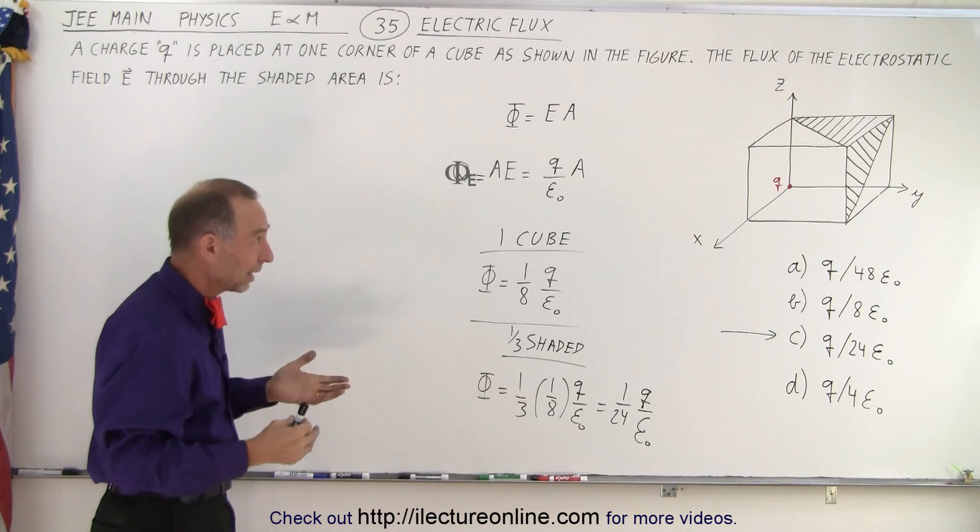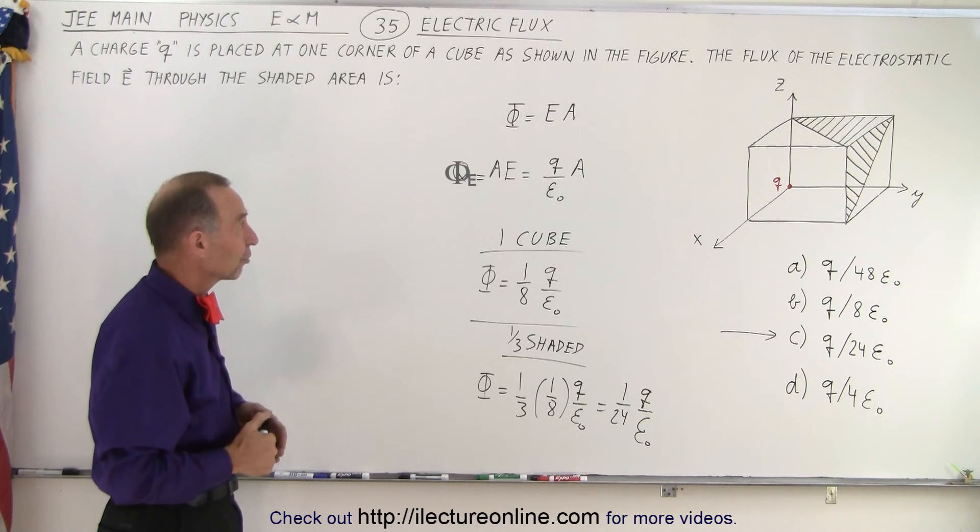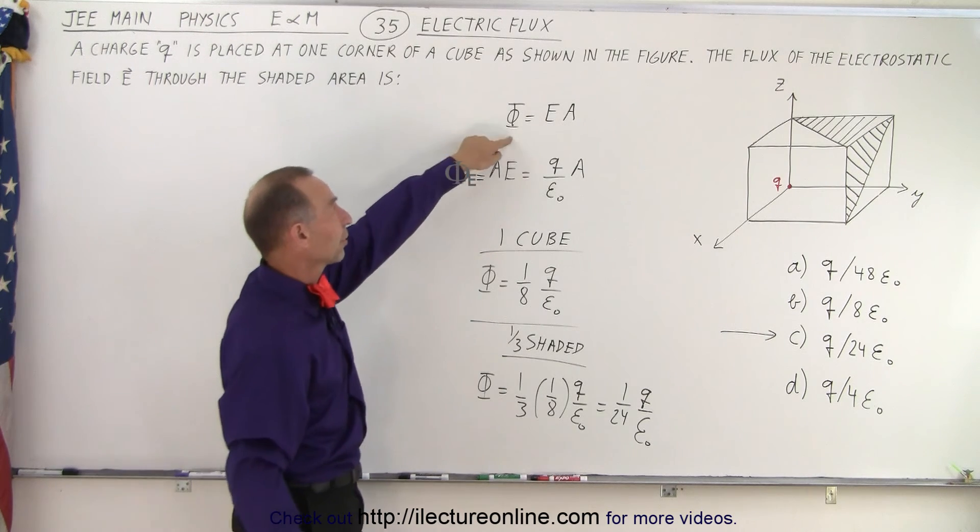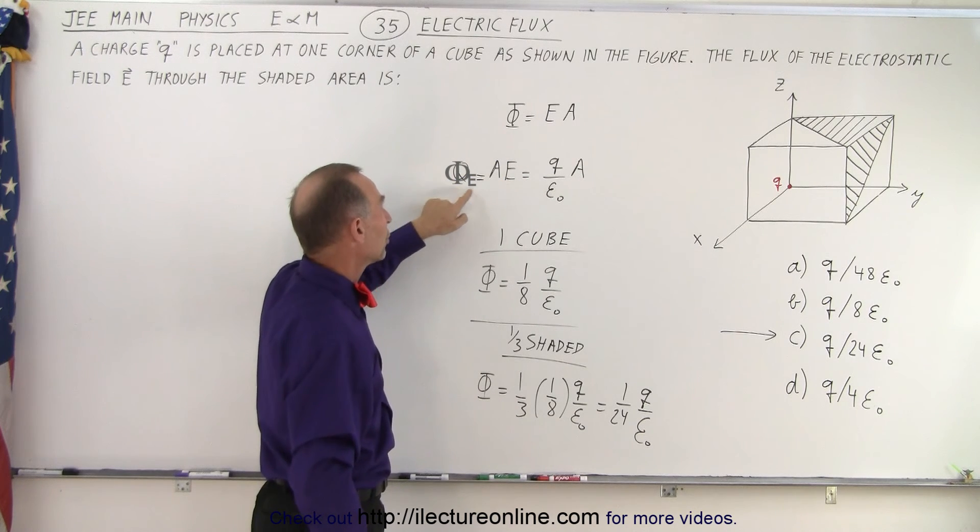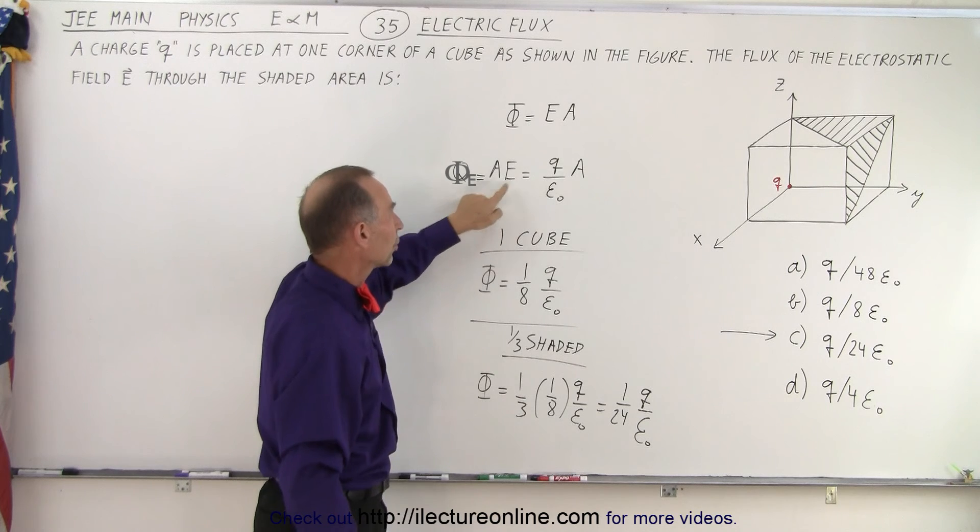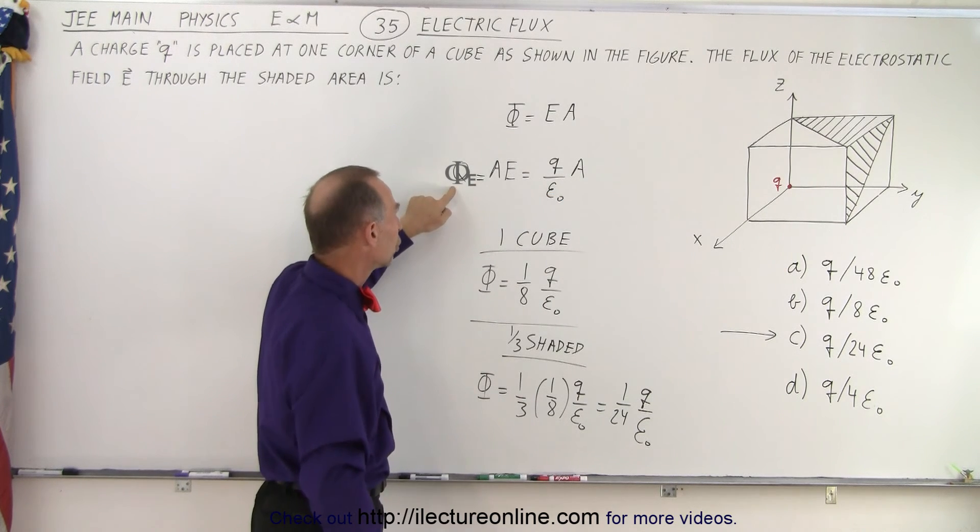So, you can actually think about that very quickly. First of all, we realize that the flux is E times A. Using Gauss's law, we know that the electric field is Q over epsilon sub-naught. Multiply both sides by A.